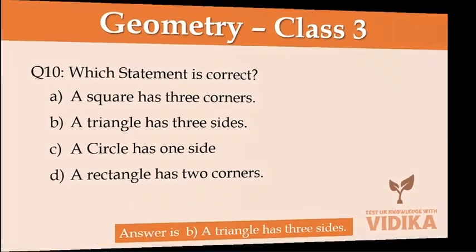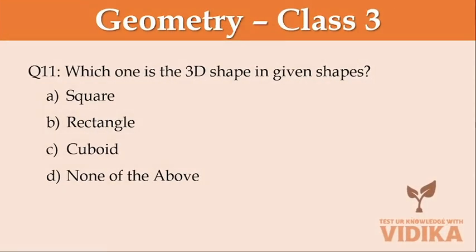Which one is the 3D shape in the given shapes? Option A square, option B rectangle, option C cuboid, option D none of the above.